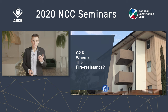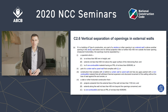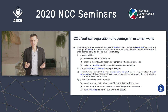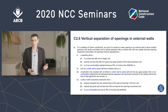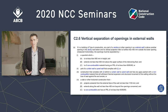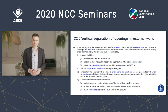So what is C2.6? C2.6 is vertical separation of openings in external walls — part of volume one. It applies to all type A buildings, like the unit building I showed you, and it's the reason we have spandrels and other construction to prevent fire from spreading from storey to storey, which is directly related to performance requirement CP2.